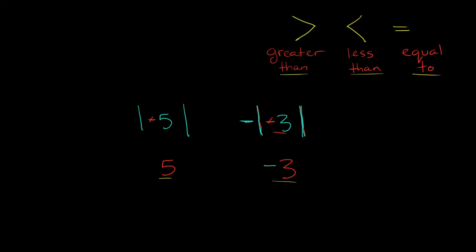Which of these three inequality symbols am I going to use to compare these two numbers? A little trick I would always use to remember which way they're supposed to face — these symbols always looked like mouths to me, so I would just draw little teeth on them. Then I would tell myself I want to eat the bigger number. Think of these as Pac-Man teeth or dinosaur teeth, and you want to eat the bigger number. So if I have 5 and negative 3, which number is bigger? 5 is bigger than negative 3, so I'm going to make the mouth face this way, eating the bigger number.